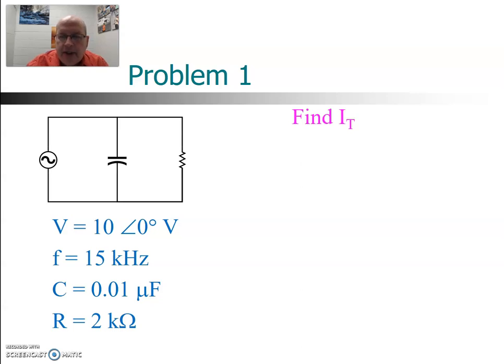So in this particular example we have a voltage source 10 angle zero, and the resistor and capacitor in parallel. The resistor is 2 kiloohms, the capacitor is 0.01 microfarads, and we want to find the total current in this circuit.